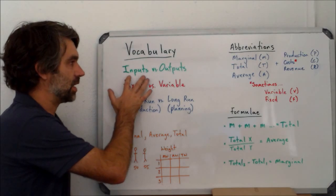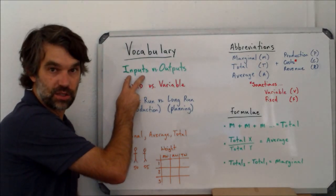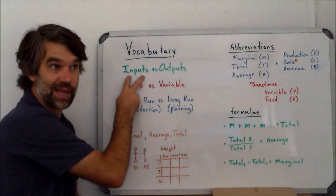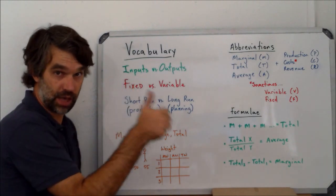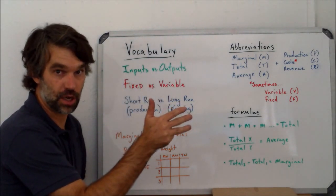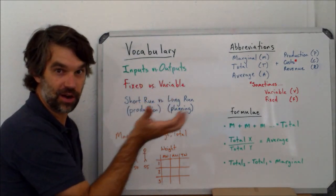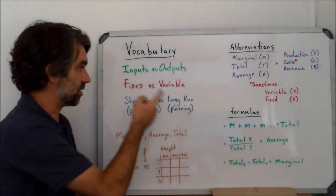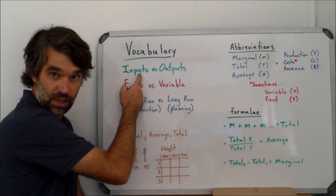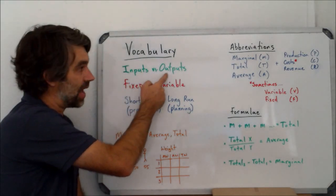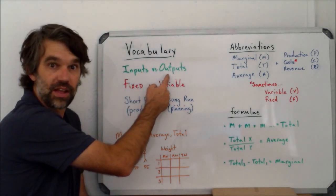First of all, when we talk about inputs, these are factors of production. So these are ingredients of making any product. They include land, labor, capital, and entrepreneurship. The output then is when I mix them all together, it's what I make. So it's just looking at what does it take to make something, what do we make something out of, and then how much do we make or what are the things we make.